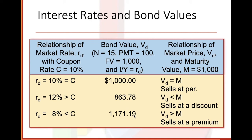Relationship of market price V_D and maturity value M = $1,000: when V_D equals M, the bond sells at par. When V_D is less than M, the bond sells at a discount. When V_D is greater than M, the bond sells at a premium. If we're investing or loaning the money, we want the most money back. But if we're paying, we want to pay less. It just depends on which side of the contract you're on.